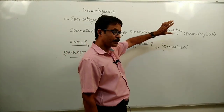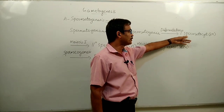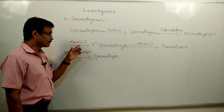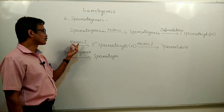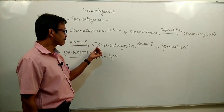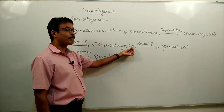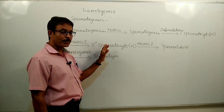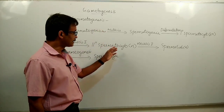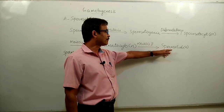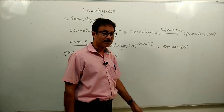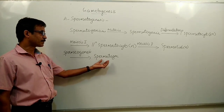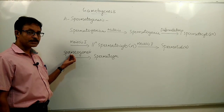Some of the spermatogonia stop division, absorb nutrients, and transform into primary spermatocytes in the diploid condition. Then from the primary spermatocyte, through meiotic division, secondary spermatocytes are formed and they have a haploid chromosome number — this is the first cell with the haploid chromosome number in spermatogenesis. Then the secondary spermatocytes become spermatids, and with the help of Sertoli cells, the spermatids transform into motile spermatozoa — a process called spermiogenesis.